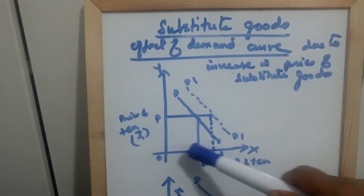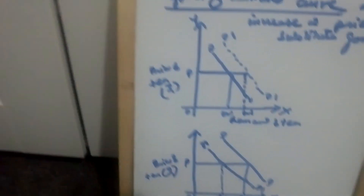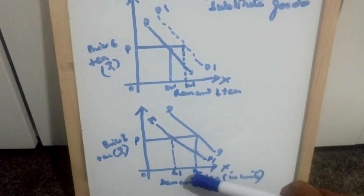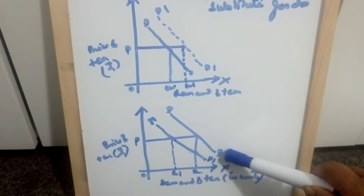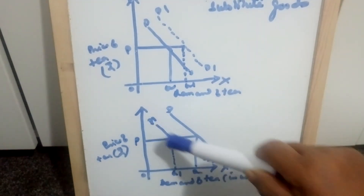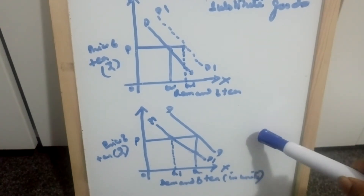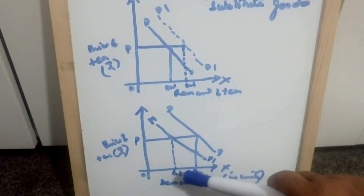When there is an increase in the price of substitute goods, demand goes up and the curve shifts right. In the same way, when there is a decrease in the price of substitute goods, the price of tea remains at OP but demand goes down from OQ to OQ1, so the DD demand curve shifts towards the left to D1D1. This is because a decrease in the price of coffee means people prefer coffee, so demand for tea has gone down from OQ to OQ1.